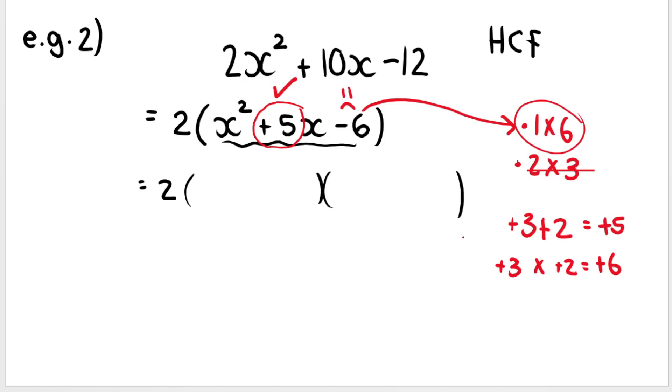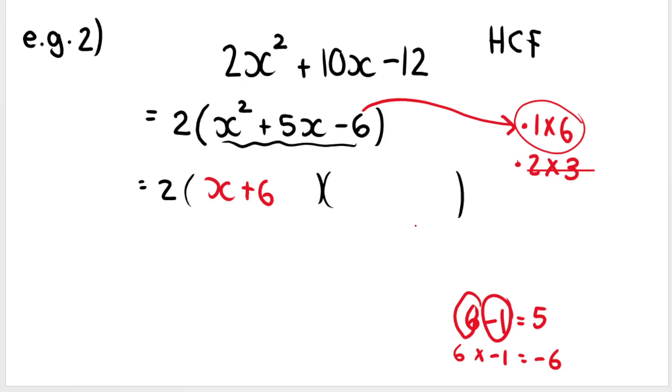Let's try 1 and 6. Can I make a positive 5 with 1 and 6? Yes, 6 minus 1 gives me a positive 5, just like I needed in the middle, so that's good. And 6 multiplied by negative 1 gives me negative 6, which I need here on the end. All good. So what that means is in my brackets, I need a positive 6. So we're going to say x plus 6, and I need a negative 1, x minus 1. Now you've factorized it fully.